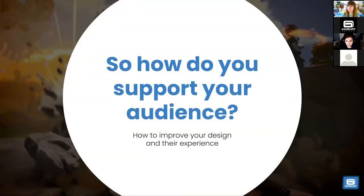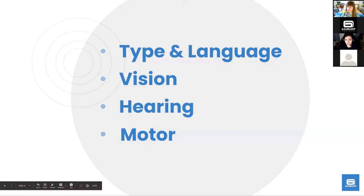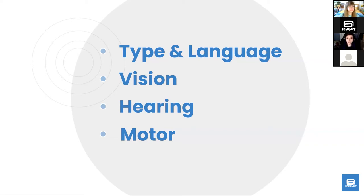So how do you support your audience? There are a lot of areas we can focus on to improve accessibility in our games. Some important ones we'll go over today: type — making sure text is legible, including language support for localized text; vision — for those with color blindness and low vision; hearing — for the deaf and those who are hard of hearing; and motor — for gamers with motor disabilities.